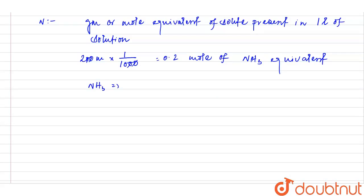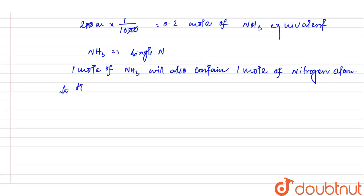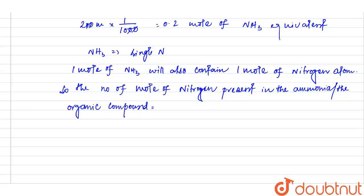Now see, a NH3 contains a single nitrogen atom. So one mole of ammonia or NH3 will also contain one mole of nitrogen, nitrogen atom. So the number of moles of nitrogen present in the ammonia is 0.2 moles.